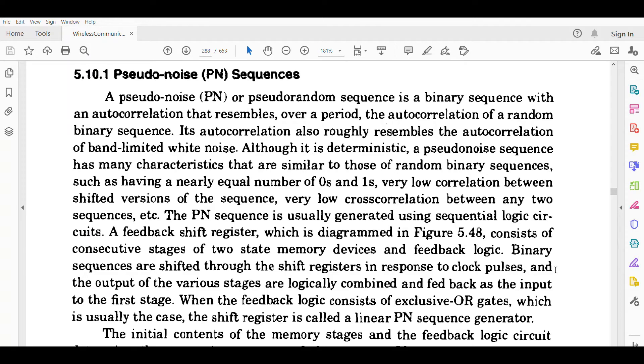The PN sequence is usually generated using sequential logic circuits - a feedback shift register, which is diagrammed in figure 5.4. The diagram consists of consecutive stages of two-state memory devices and the feedback logic.